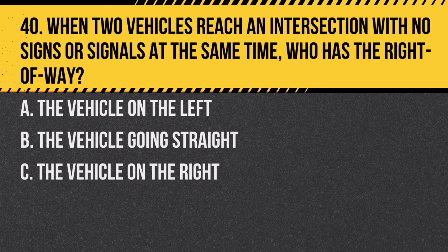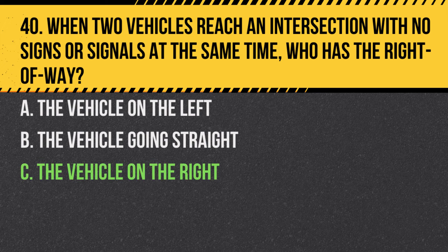Question 40. When two vehicles reach an intersection with no signs or signals at the same time, who has the right of way? a. The vehicle on the left. b. The vehicle going straight. c. The vehicle on the right. The right of way is given to the vehicle on the right in this situation.